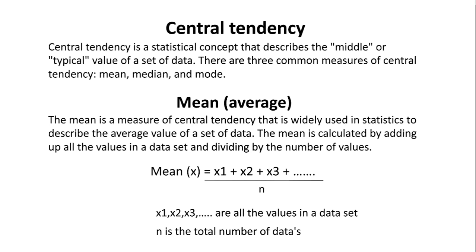Mean, or average. The mean is a measure of central tendency that is widely used in statistics to describe the average value of a set of data. The mean is calculated by adding up all the values in a data set and dividing by the number of values. Mean x equals x1 plus x2 plus x3 and so on, divided by n. x1, x2, x3 are all the values in a data set, and n is the total number of values.